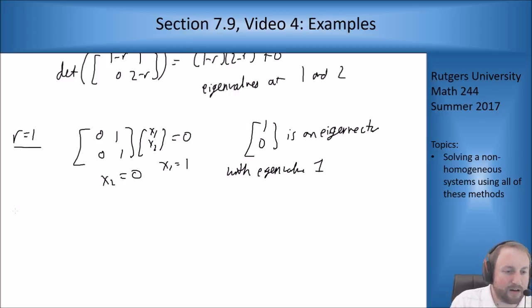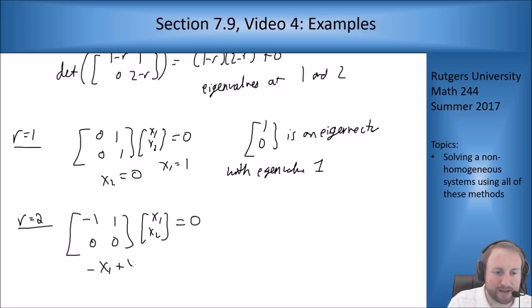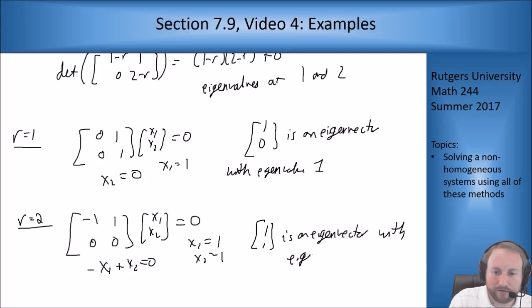For r = 2, I get [−1,1; 0,0] [x1; x2] = 0. So −x1 + x2 = 0. I can set x1 = 1, x2 = 1. So [1; 1] is an eigenvector with eigenvalue 2.